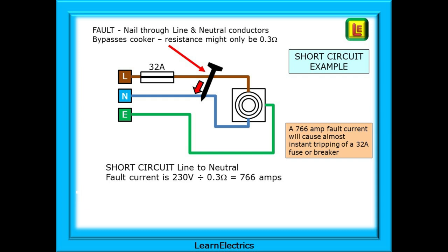Let's have a short circuit on this cooker now. Someone has put a nail into the wall and straight through the line and neutral conductors. The electricity, the current, will now flow through the fuse to the nail, along the nail, and back along the neutral. The current will effectively bypass the resistance of the cooker. All we are left with now is the resistance of part of the wiring, which in this example, we have said is just 0.3 ohms. If the current is bypassing the cooker, how much current is flowing? 230 volts divided by 0.3 ohms is a massive 766 amps. That little 32-amp breaker is going to trip almost instantly and make the circuit safe.